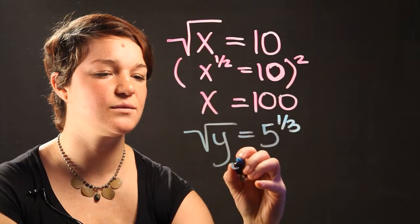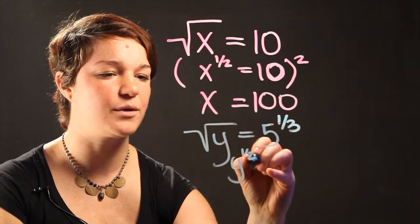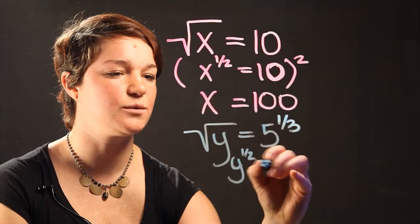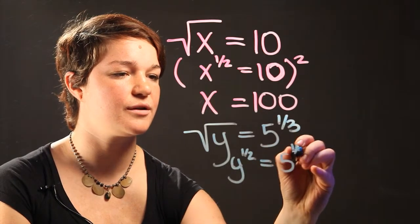We're going to say that it's y to the 1 half power is equal to 5 to the 1 third power.